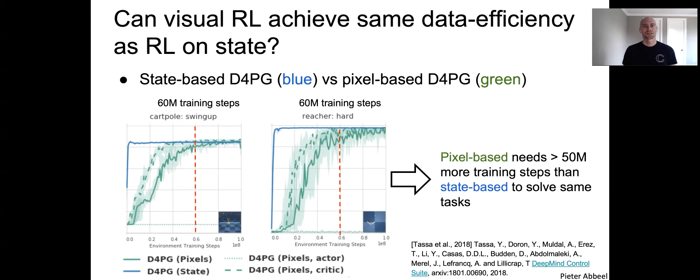So the big question here is, can visual RL achieve the same data efficiency as RL that gets to operate on state? Of course, as roboticists, we know the benefit of access to state is that it summarizes all you need to know about the environment into a small set of variables. So you might expect that learning from state can be more efficient than learning from pixels.